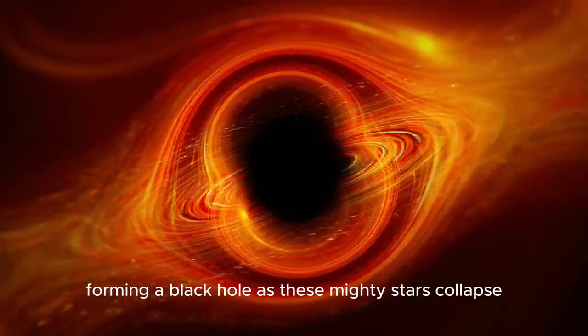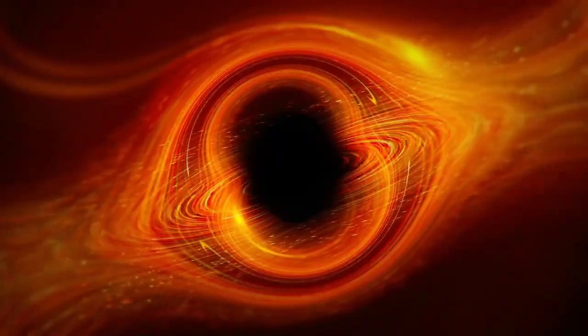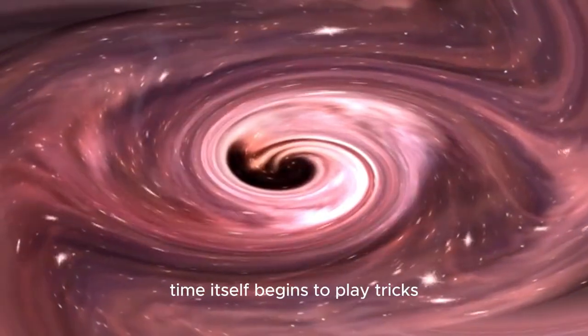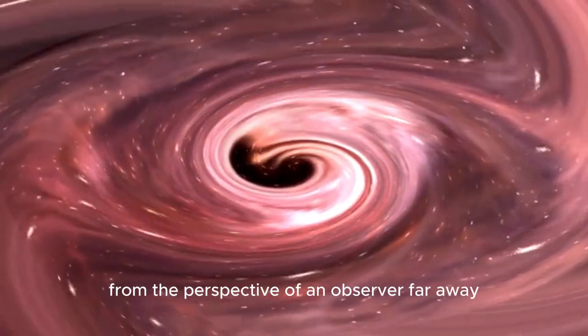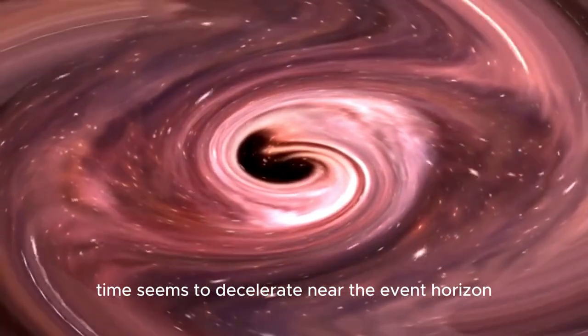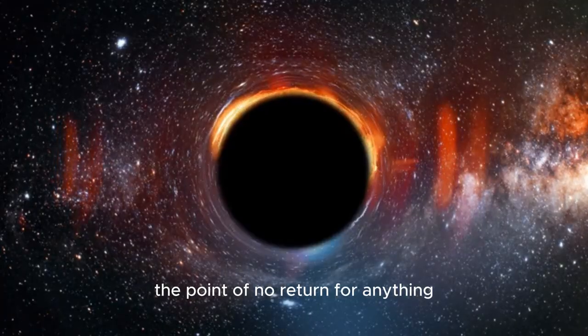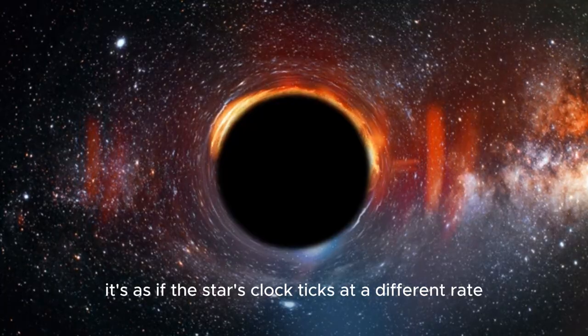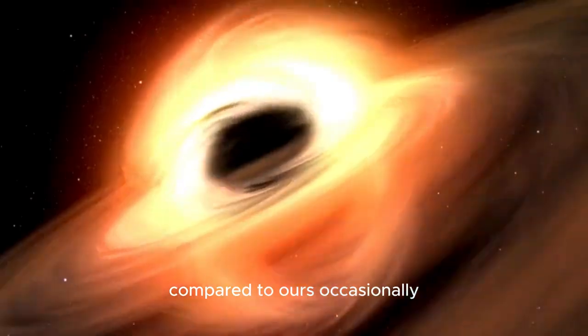As these mighty stars collapse, something peculiar occurs near their surfaces. Time itself begins to play tricks. From the perspective of an observer far away, time seems to decelerate near the event horizon, the point of no return for anything falling into a black hole. It's as if the star's clock ticks at a different rate compared to ours.